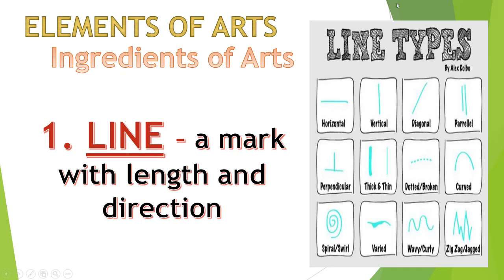Now we have the elements of arts — the ingredients of arts. The first element is line: a mark with length and direction. The types of lines include horizontal, vertical, diagonal, parallel, perpendicular, thick and thin lines, dotted and broken lines, curved lines, spiral or swirl, wavy and curly, zigzag, and jump lines.